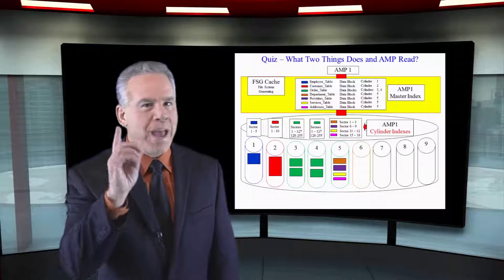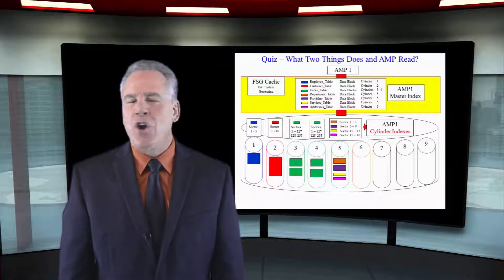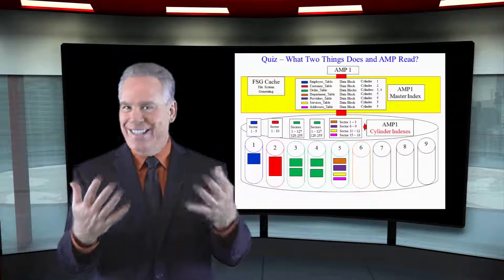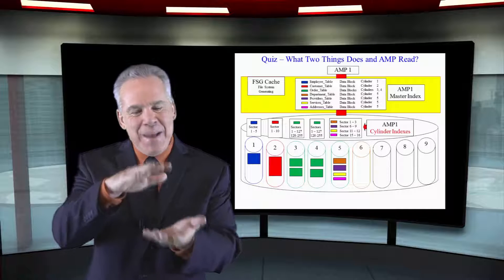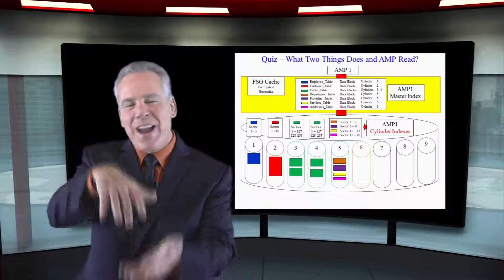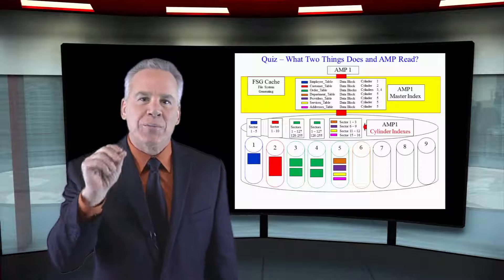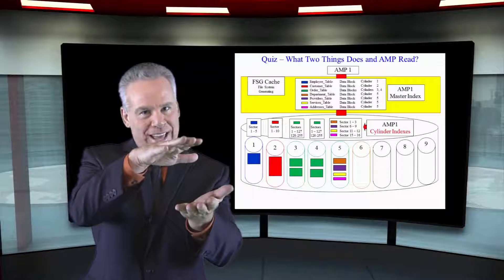The one master index on each amp is always in memory. But there's just so many cylinder indexes, they may or may not be in memory. They try to get as many of them in there as they can, but they can't always get them all. So sometimes they may still have to bring that into memory.